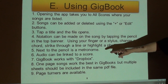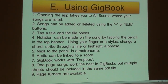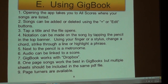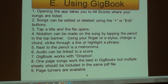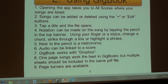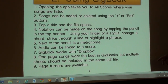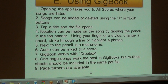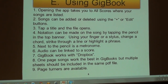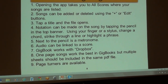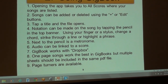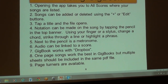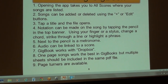Audio can be linked to a score — just tap on the score and a little menu will come out. Hit Details, then go find the music you want to sync with it, and each time you select that song in GigBook it'll play it. One-page songs work the best. If you have multiple sheets, they should be included in the same PDF file. You can tap the bottom right of the screen to flip to the next page. They also have aftermarket page turners that work off foot pedals.